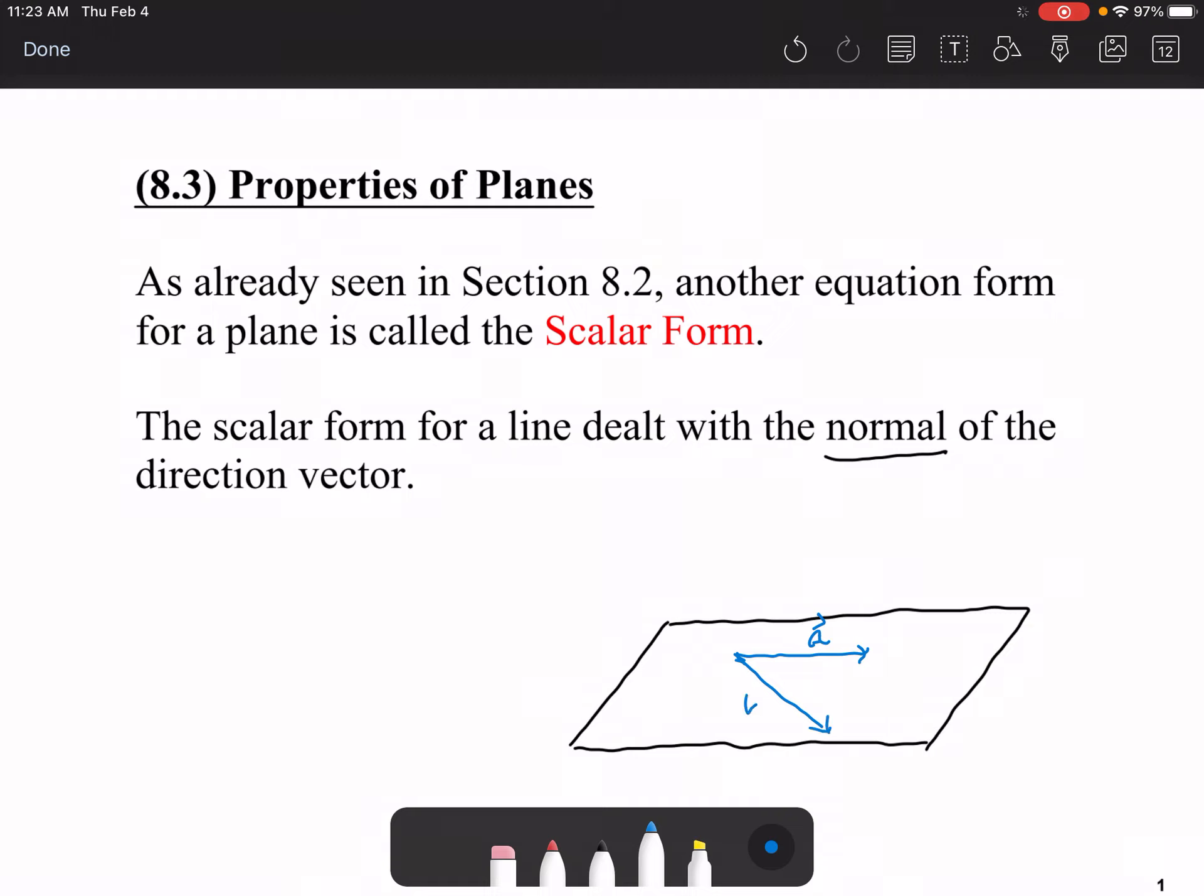it also has to have another directional vector. Let's call that one B. Well, the normal is this vector right here. The normal is orthogonal to the directional vectors. So that means it has to be a right angle to each one of these.